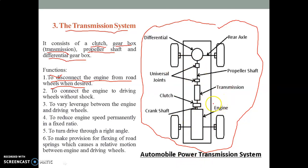In this diagram, we can observe the power plant — that is, the engine — as the power source. Along with the engine, the clutch is connected via the engine shaft. Whatever total energy is developed inside the engine is transmitted from the clutch to the transmission system. This is an important part. Then the differential gearbox is connected with the transmission system with the help of the propeller shaft.